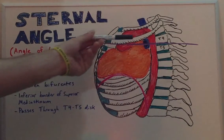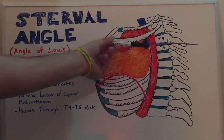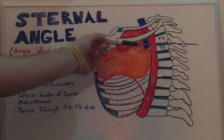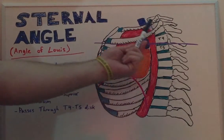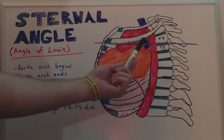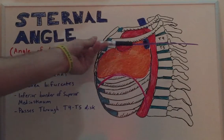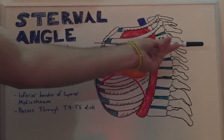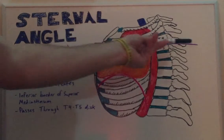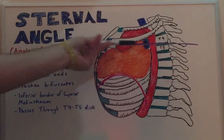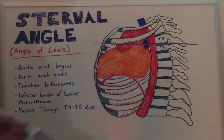We have the end of the inferior border of the superior mediastinum, which would be this cavity right here. All of these structures are at the level of T4 and T5 vertebrae, as we can see right here.